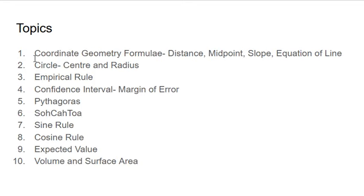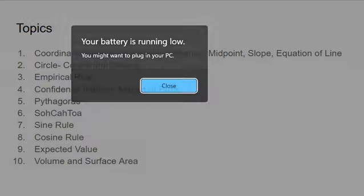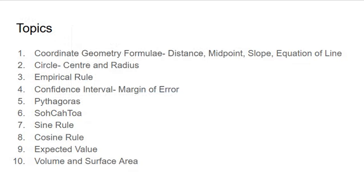The first topic is coordinate geometry — distance, midpoint, slope, and equation of a line. I've included them all as one group, but they're all about reading off the formula from the log tables and identifying what x1, y1, x2, y2 are, then substituting them into the formula. Those are fairly repetitive but we need practice putting them into the formula.